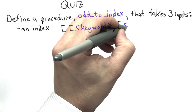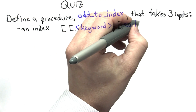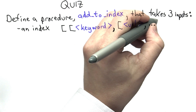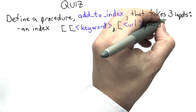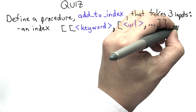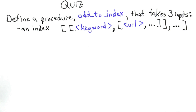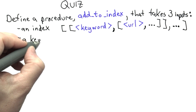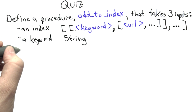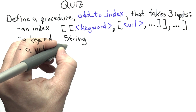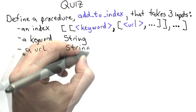It takes three inputs. The first input is the index that we want to add the new keyword and URL to. The second input is a keyword — that's just a string, the word that we want to add to the index. And the third input is the URL, which is a string that encodes the URL where that keyword appears.